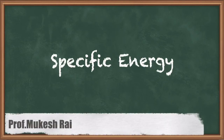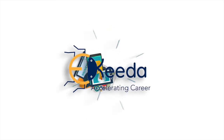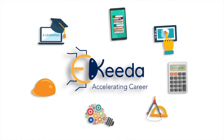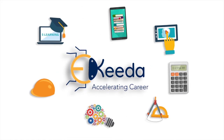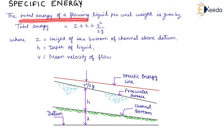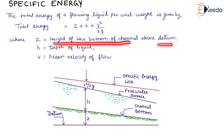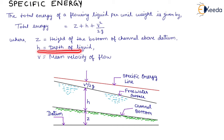Hello students, today we are going to study specific energy. The total energy of a flowing liquid per unit weight is given by Z plus H plus V² upon 2G, where Z is the height of the bottom of channel about the datum, H is the depth of liquid, and V is the mean velocity of flow.